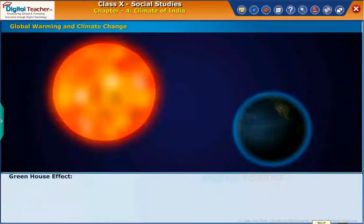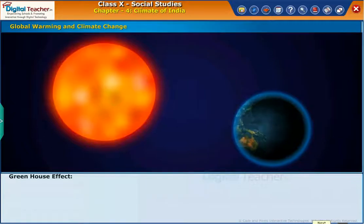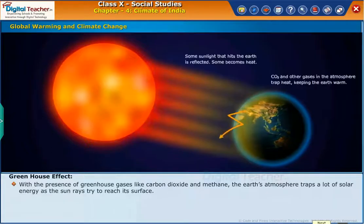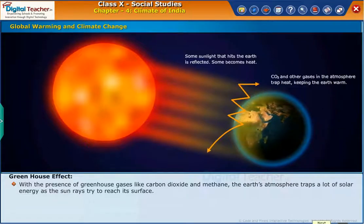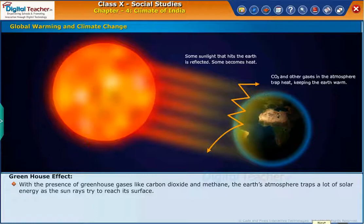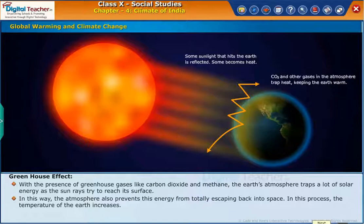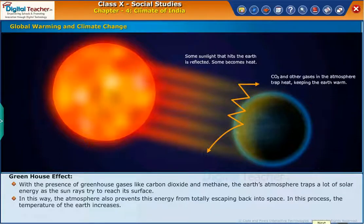Now let us learn about the greenhouse effect. With the presence of greenhouse gases like carbon dioxide and methane, the earth's atmosphere traps a lot of solar energy as the sun's rays try to reach its surface. In this way, the atmosphere also prevents this energy from totally escaping back into space.